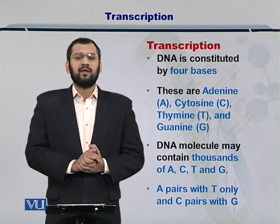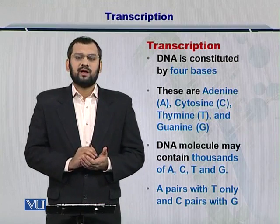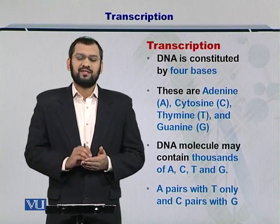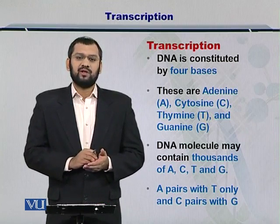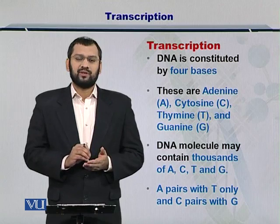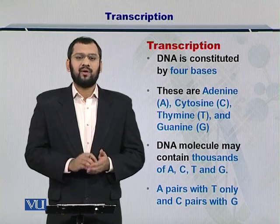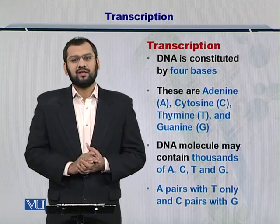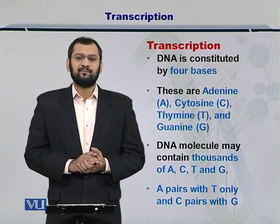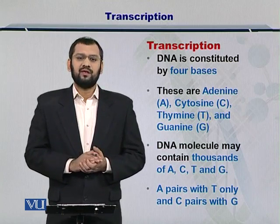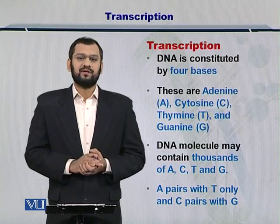Moreover, A only couples with T in the DNA and G only couples with C. However, in the RNA, A gets coupled with U and C stays coupled with G.